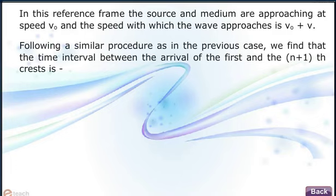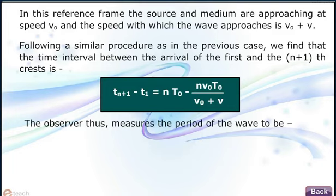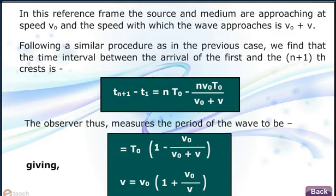Following a similar procedure as in the previous case, we find that the time interval between the arrival of the first and the (n+1)th crest is T(n+1) minus T1 equals n T0 minus n V0 T0 upon (v plus V0). The observer thus measures the period of the wave to be T0(1 minus V0 upon v plus V0), giving ν equals ν0(1 plus V0 by v).